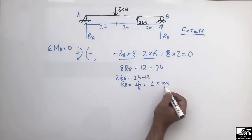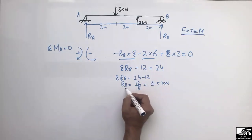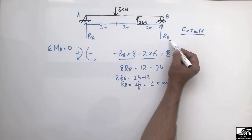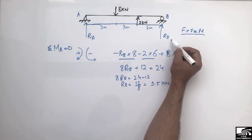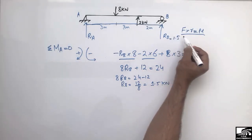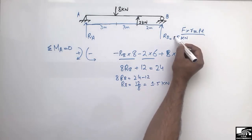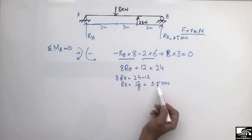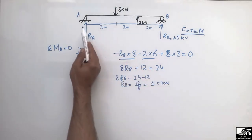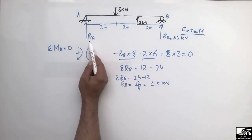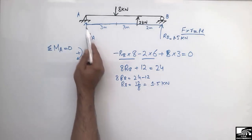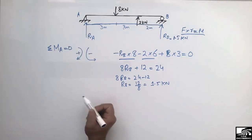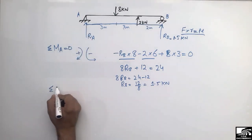We are using kilonewton units, so the unit of RB is also kilonewtons. RB comes out to be 1.5 kN — this is the support reaction at B. Now we need to find the support reaction at A, RA.